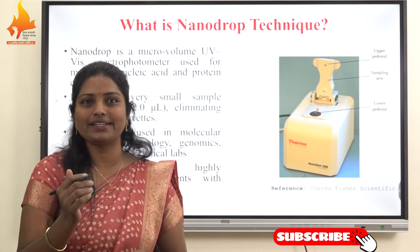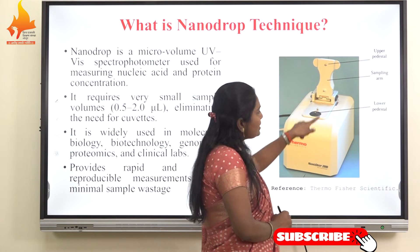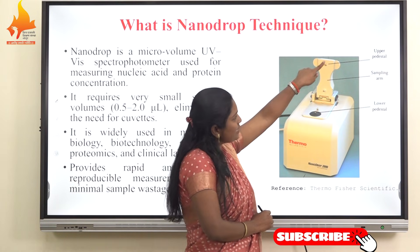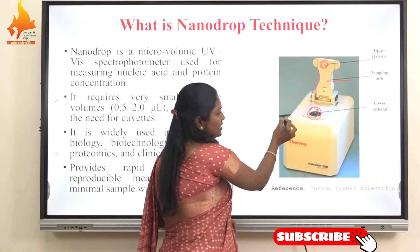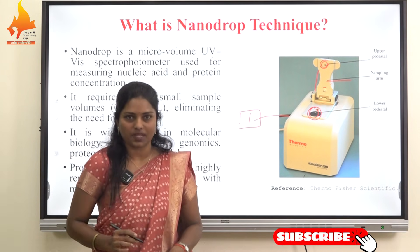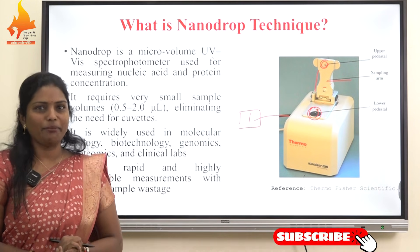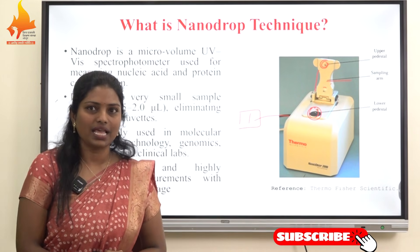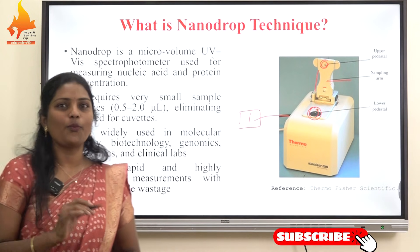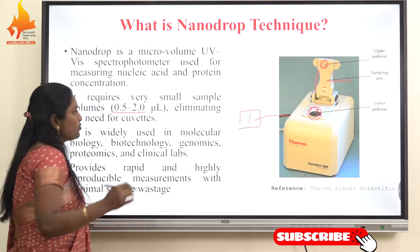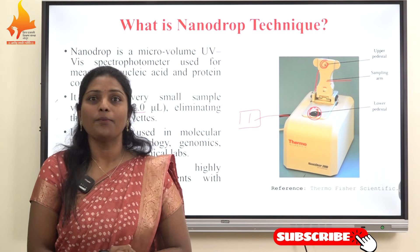This is the nanodrop instrument, which contains the upper pedestal, the lower pedestal, and a sampling arm connected to a computer with a digital display. The nanodrop is a micro-volume UV-visible spectrophotometer that measures the absorbance of biological samples in the ultraviolet and visible range. It typically requires only 0.5 to 2 microliters of sample, uses surface tension to hold the sample, and provides instant concentration and purity data.